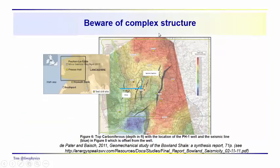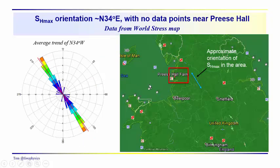The lesson from the UK experience is to be aware of complex structure in the area. This is the region of England where stimulation of the Preese Hall well took place, and you can see there are obvious faults — it's a complexly faulted area. You would want to know the maximum compressive principal stress (SH Max) orientations. Taking a look at the group of events to the east and south, we get an average trend of about N34W, shown by the blue line.